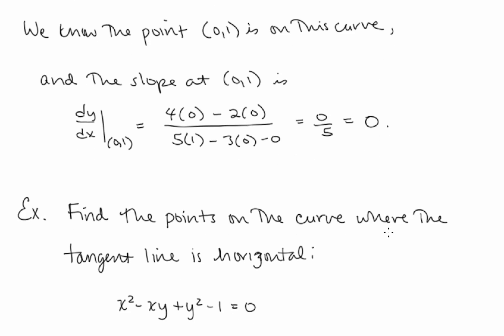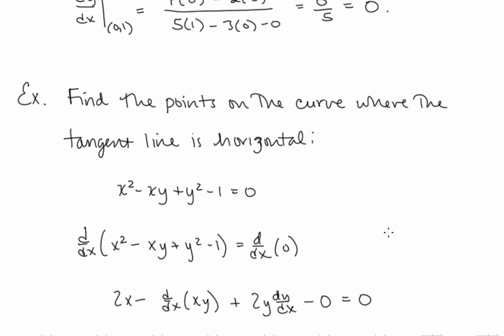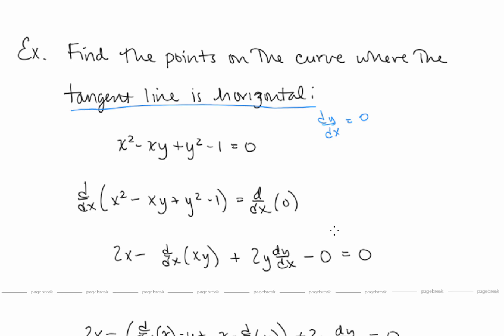Let's look at another example: find the points on the curve where the tangent line is horizontal. A horizontal tangent line means dy/dx equals 0, so we need to find dy/dx and then set it equal to 0. Taking the derivative with respect to x of both sides, the derivative of x² is 2x. We'll need to use the product rule, and we'll have 2y·dy/dx for the y² term, with 0 on the right side.